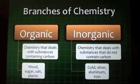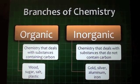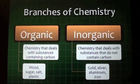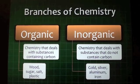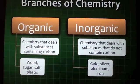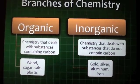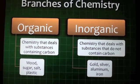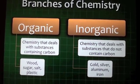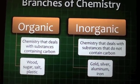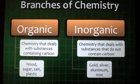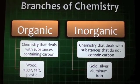Organic chemistry deals with substances containing carbon, such as wood, sugar, salt, and plastic. Inorganic chemistry deals with substances that do not contain carbon — gold, silver, aluminum, and iron are examples of inorganic chemistry.